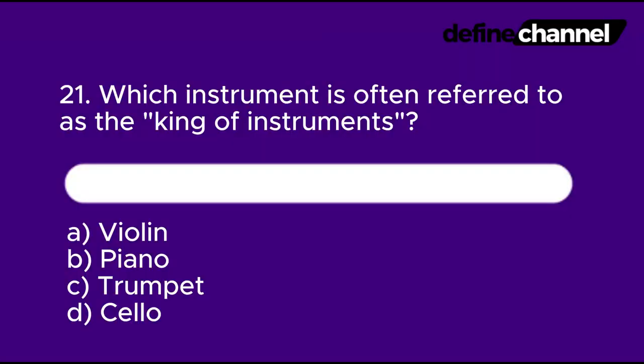Question 21: Which instrument is often referred to as the king of instruments? A. Trumpet. B. Cello. In 10 seconds, which do you think is the correct answer?